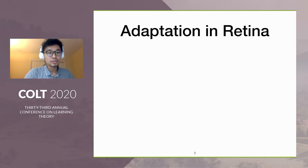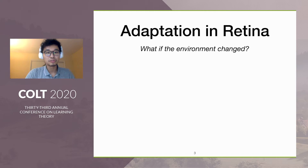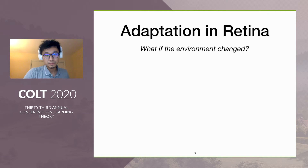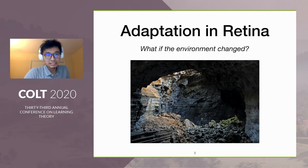In addition to simply recording the input visual information, the retina is also doing something more brilliant. In particular, the retina will change a depth according to the environment. For example, imagine that you are skiing in a white mountain, and suddenly you fell into a cave.